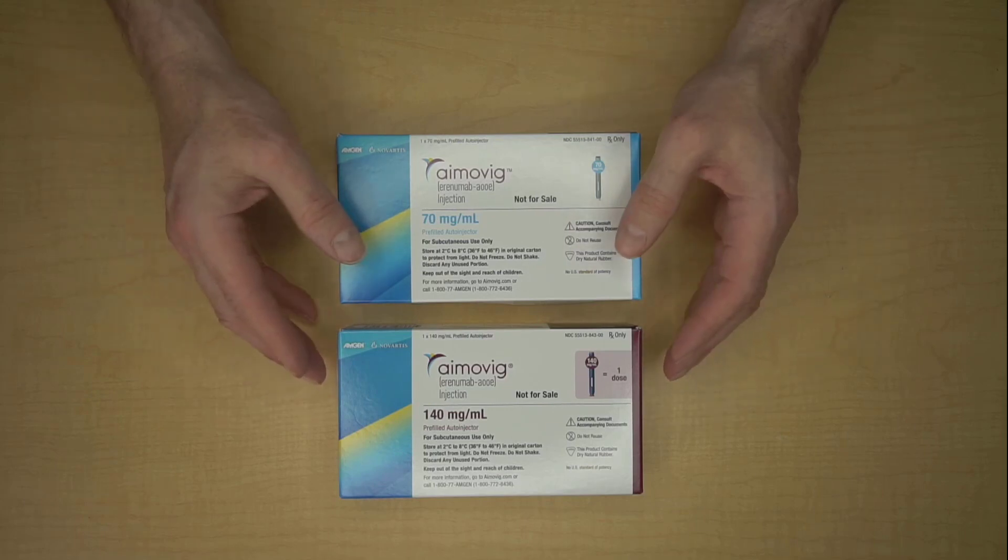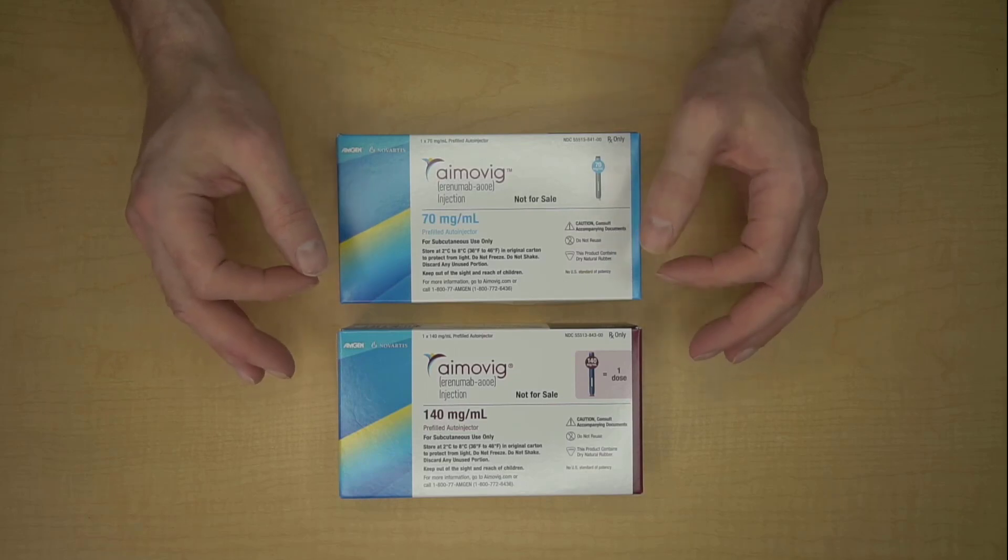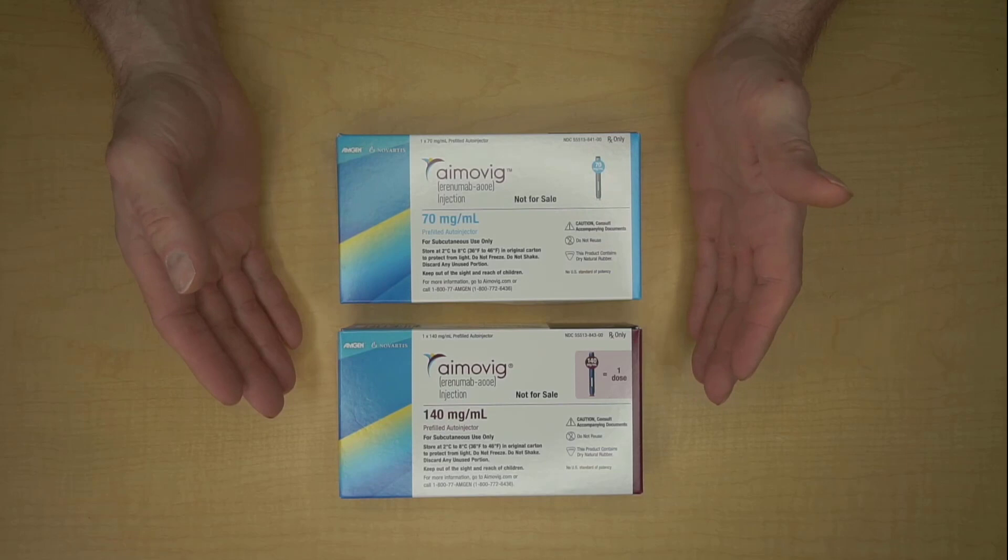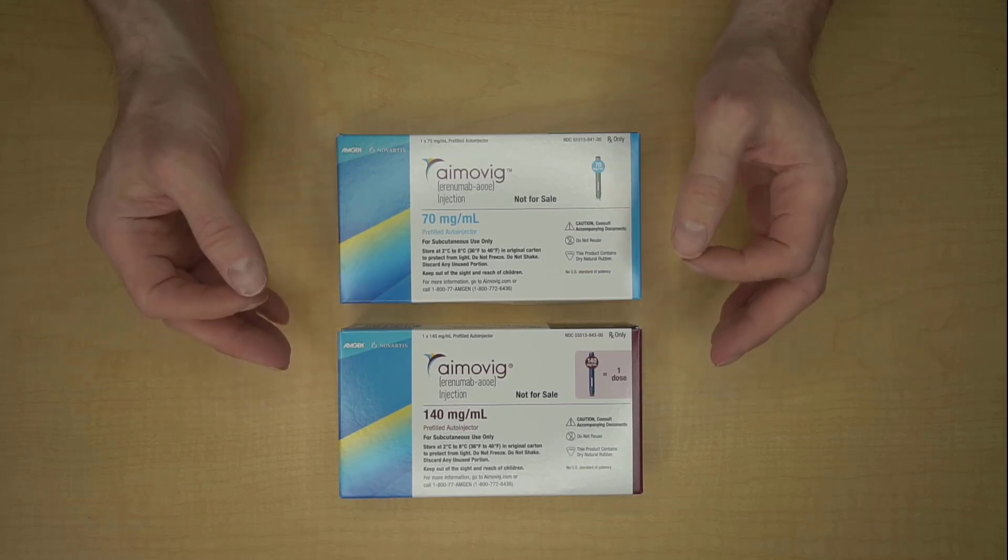There's also the possibility of getting an allergic reaction to Amovig, and that allergic reaction could range from mild, like a rash or hives, to something more severe, like angioedema, which is swelling of the throat or of the tongue or of other parts of the body. Of course, if you get any of those reactions, you should report them to your doctor and, if needed, go to the emergency room right away.